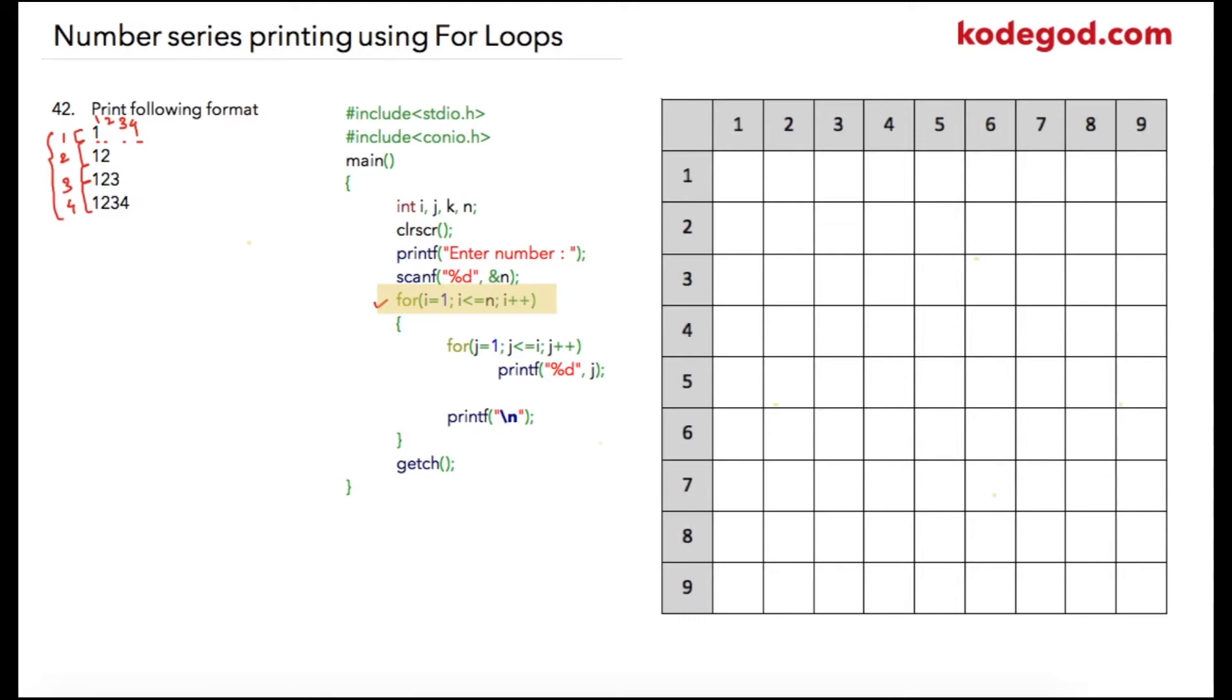We are going to write the first loop for iterating n times. Here suppose user has entered 4, then iteration will be for four times. For the second loop we need to restrict number of printing these values to the row numbers - in the first row we have printed one number, in second row two numbers, in third three numbers, and in fourth four numbers.